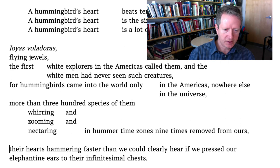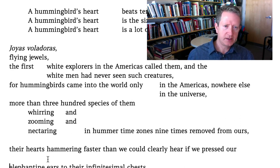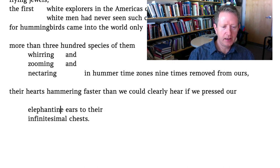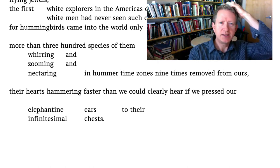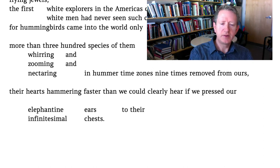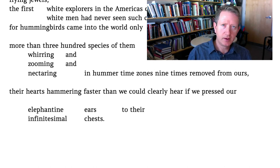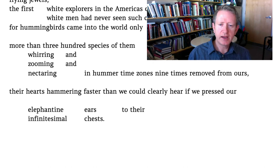I'm going to break out 'elephantine ears to their infinitesimal chests' so I can see the parallelism. Elephantine ears, infinitesimal chests — we can see that length thing working on smaller levels too. We have this long adjective 'elephantine' preceding a very short body part 'ears,' and long adjective 'infinitesimal' again preceding a very short noun body part. Going back to 'whirring and zooming and nectaring' — this is imitating the very flight of the hummingbird, whooshing from one word to another, just like a hummingbird whooshes from flower to flower.